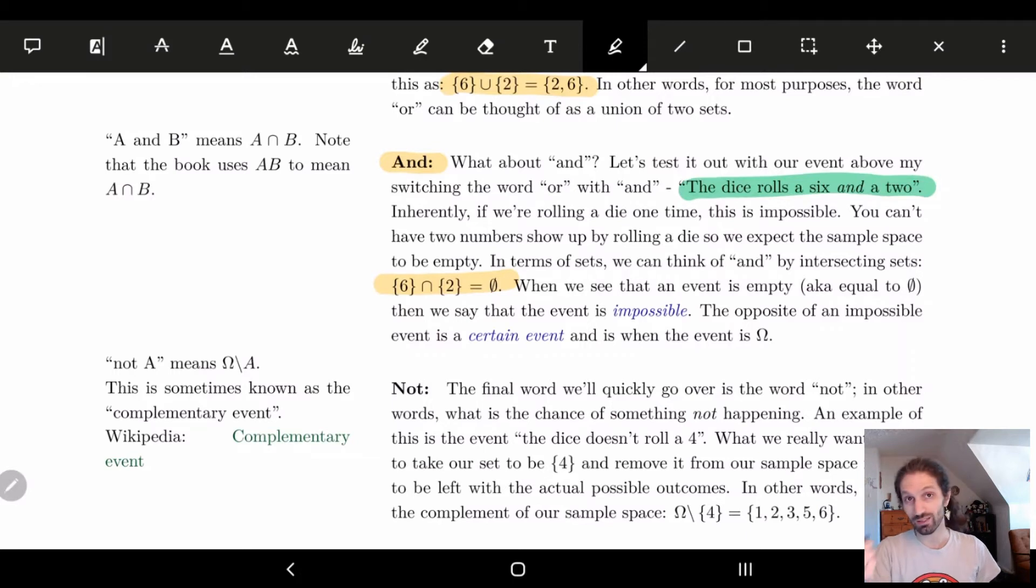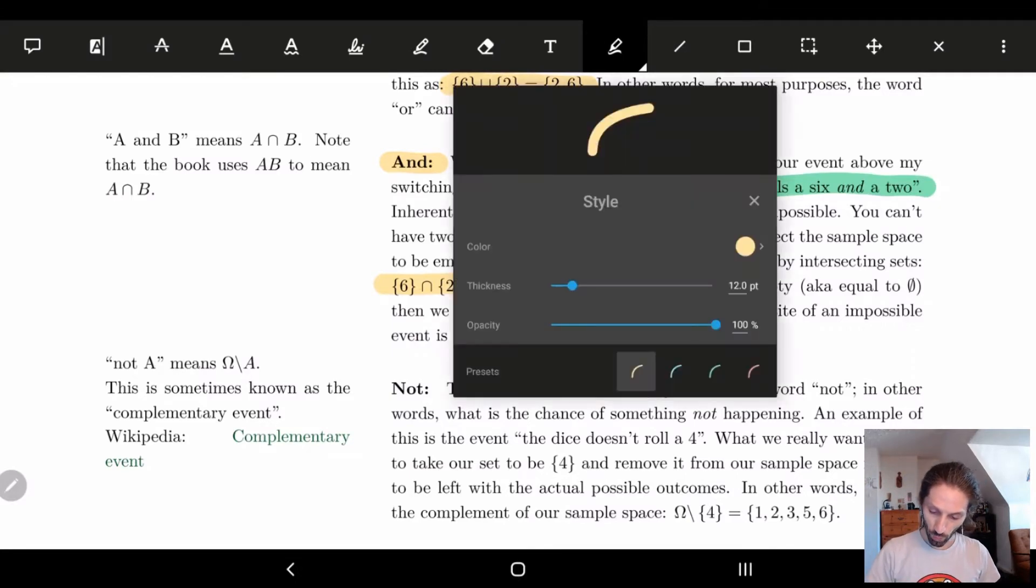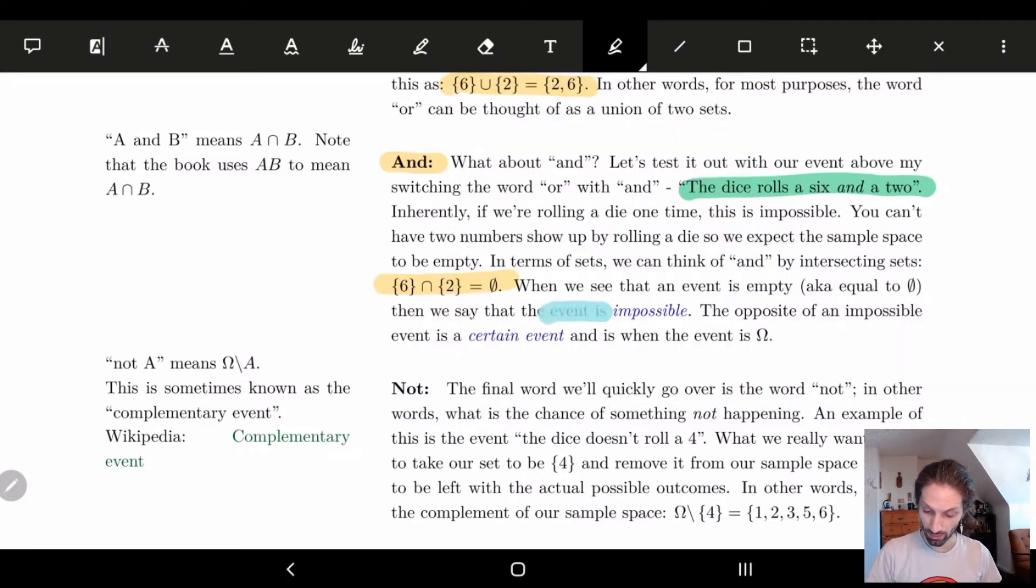And if you'll notice for the dice rolling example, we get that the intersection is empty. So when we get an empty intersection, what we're basically saying is that this event is impossible. So there are such things as impossible events. It's when the subset is empty. That's it. If the opposite of that, something that is certain, something that is guaranteed, well, this is just when we take all the outcomes, right? If we take all the outcomes, it's going to happen. Something's going to happen within that outcome. And so it's a certain event. It's a guaranteed event.